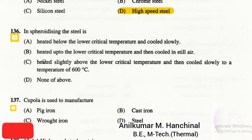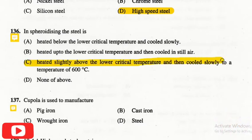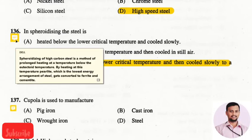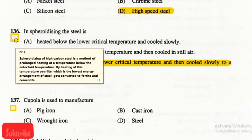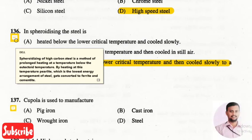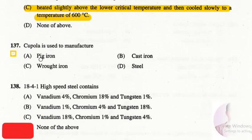The next question is: in spheroidizing, the steel is? The right answer is option three — the steel is heated slightly above the lower critical temperature and then cooled slowly to about 600°C. Spheroidizing is especially done in high carbon steel and is a method of prolonged heating at a temperature below the eutectoid temperature. By heating at this temperature, the pearlite is converted into ferrite and cementite.